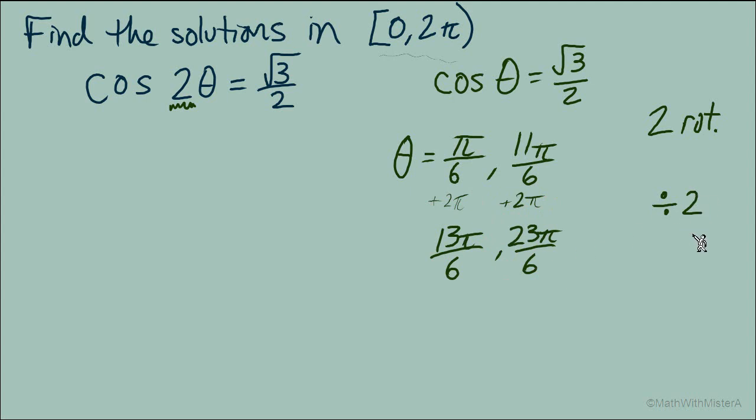Next, divide each of these solutions by 2. Dividing by 2 is the same as multiplying the denominator by 2. So our solutions now become π/12 and 11π/12, 13π/12 and 23π/12.